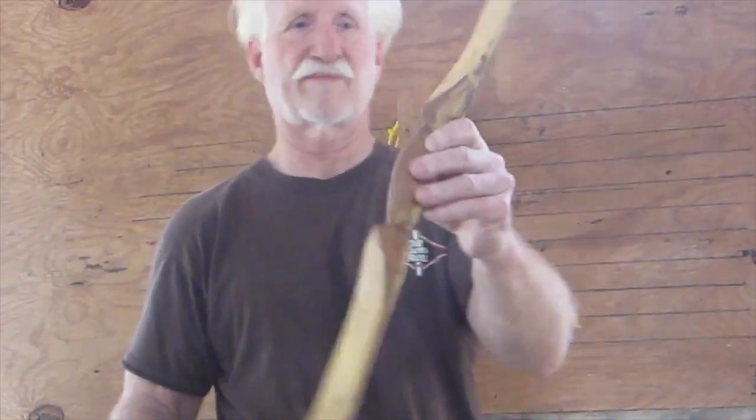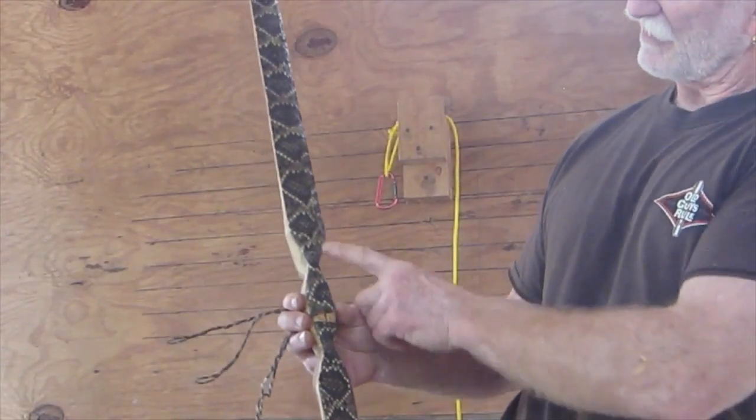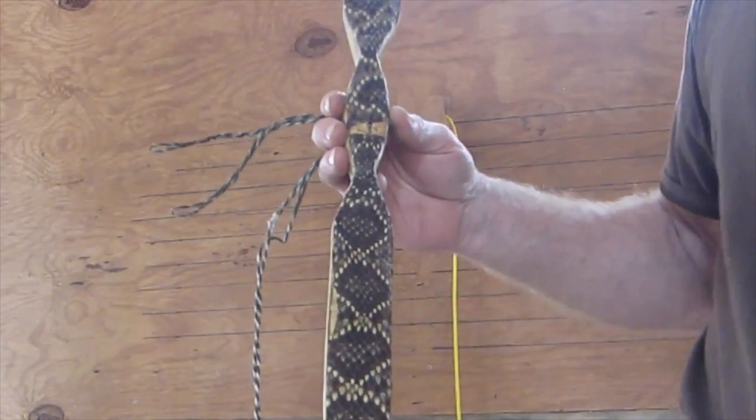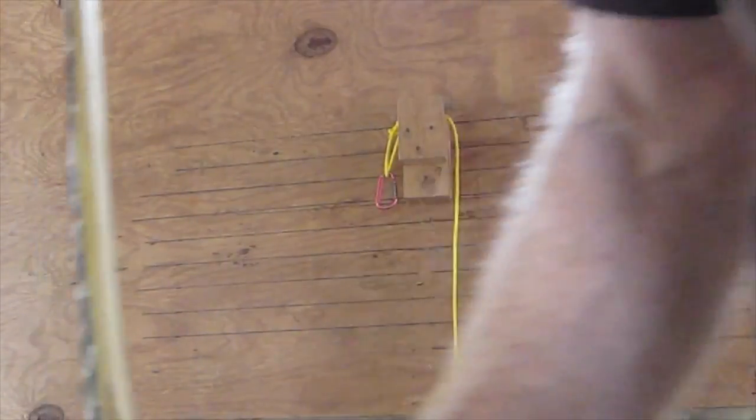Anyway, there it is. Fine looking piece. Very very proud of this piece. Snakeskin all the way. Eastern Diamondback Rattler. And just stay tuned. I'll see you in a little bit.